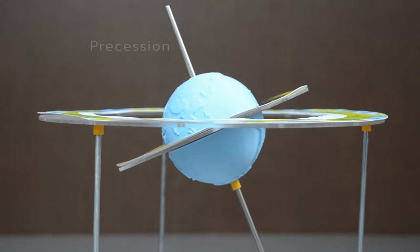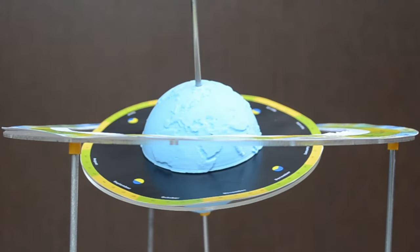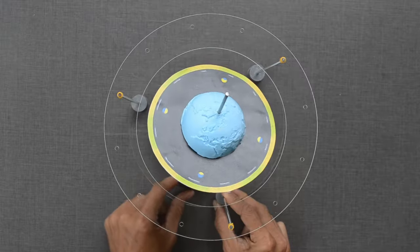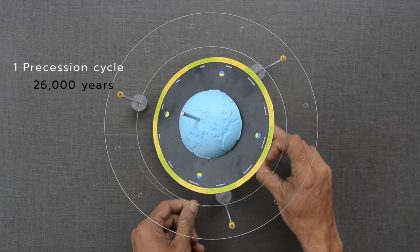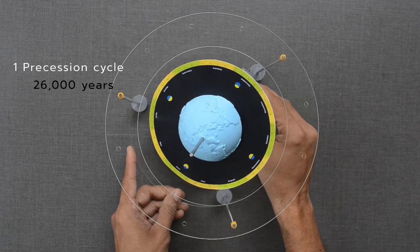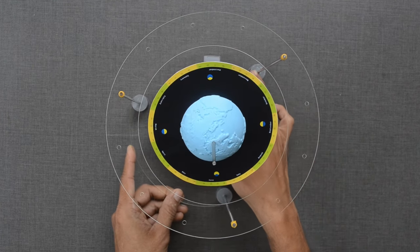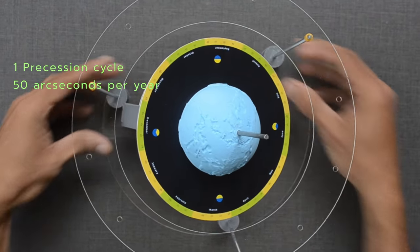It happens due to the gravitational forces exerted by the Sun and Moon on the Earth. Earth goes through one such complete precessional cycle in a period of approximately 26,000 years. That is almost 1 degree every 72 years or 50 arc seconds per year.